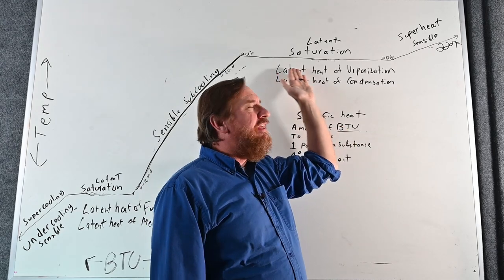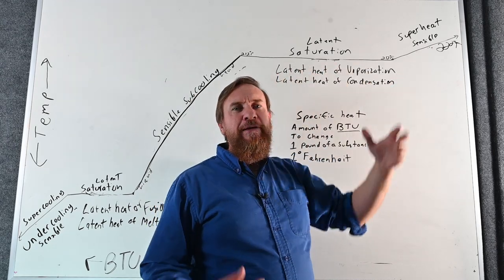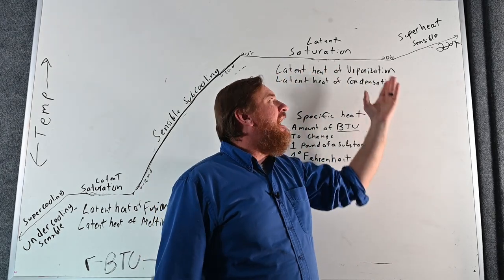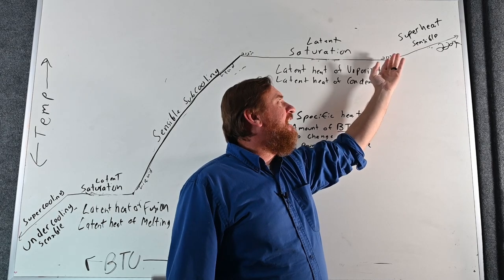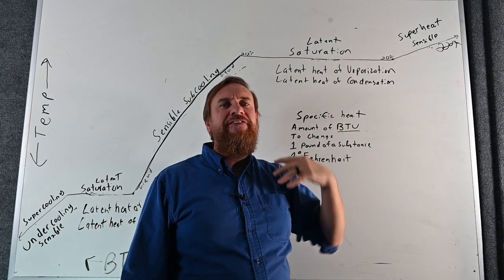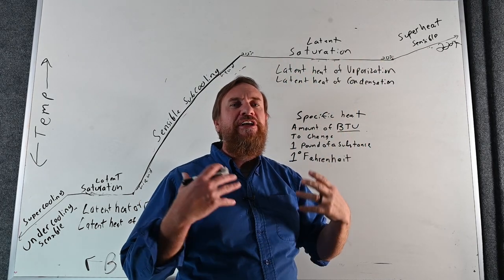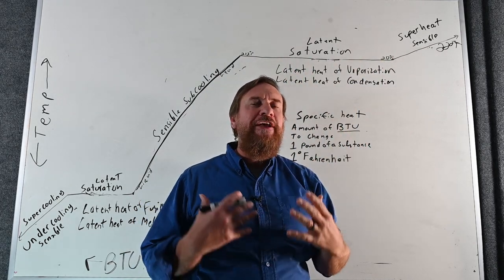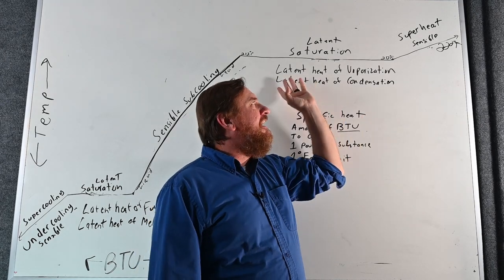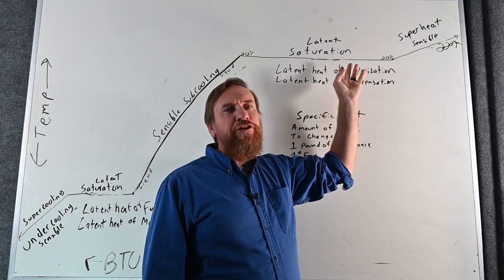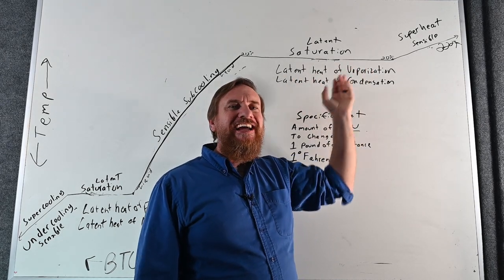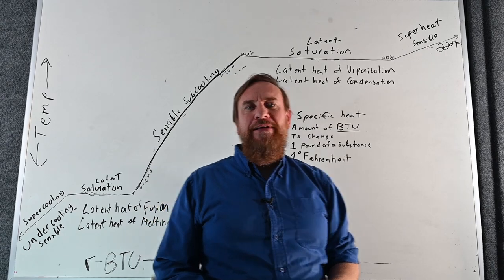A lot of people also refer to it as the latent heat of condensation — the refrigerant is vaporizing, changing state from liquid to vapor, and then changing state again from vapor back to liquid. There is a massive amount of BTU rejected, and in the case of water at 212°F, that is 970 BTUs.